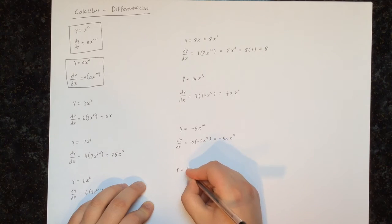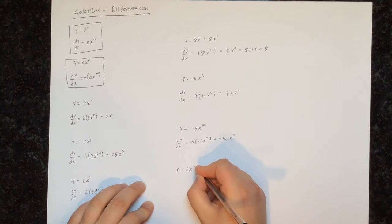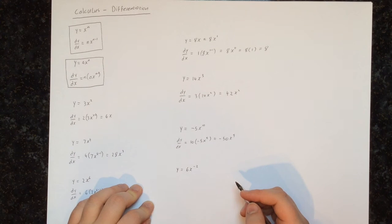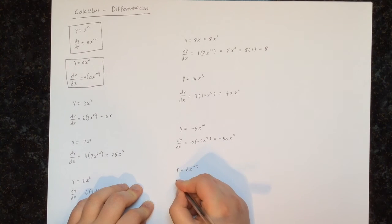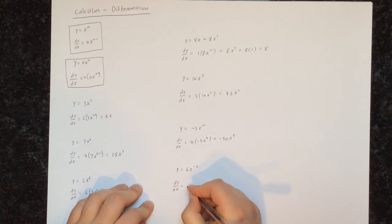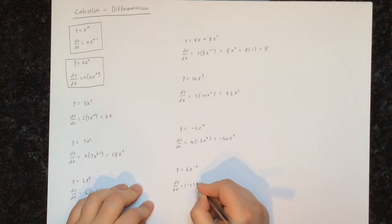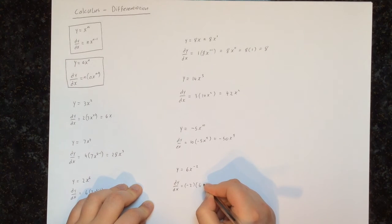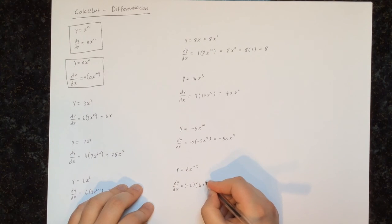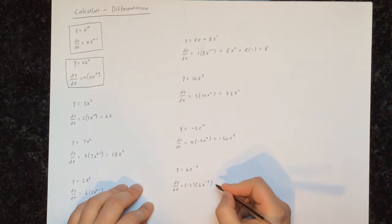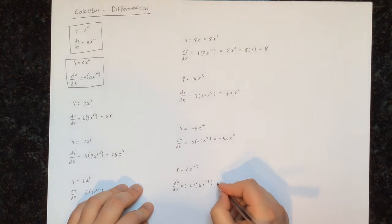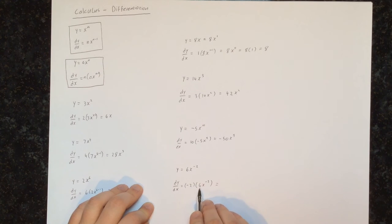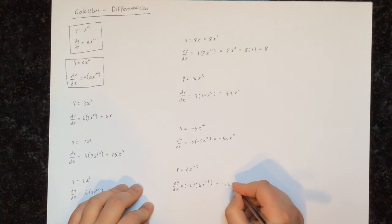Next, let's try y equals 6x to the power of minus 2. This works exactly the same way — the only thing that makes it look different is the power is negative, but it still works the same. To calculate dy/dx, we multiply by the power, which is minus 2, and then reduce the power by 1: minus 2 minus 1 gives us minus 3. So we have minus 2 times 6 equals minus 12, times x to the power of minus 3.